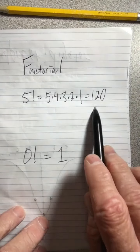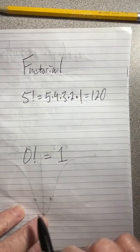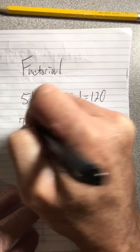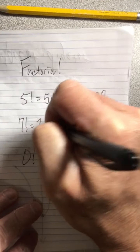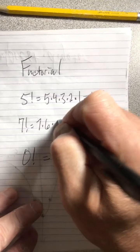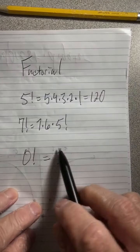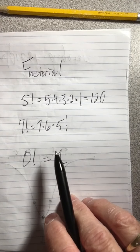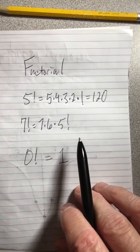One more example: what if I wanted 7 factorial? That would be 7 times 6 times all of that 5 factorial. So I would just go 6 times the 120, and then 7 times that result to get 7 factorial. I won't finish that, I'll let you do it.